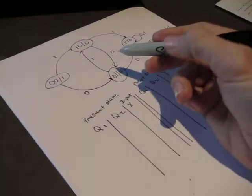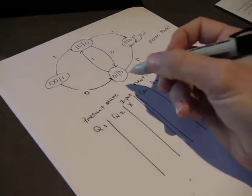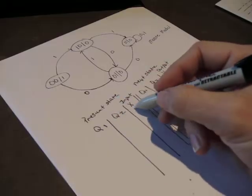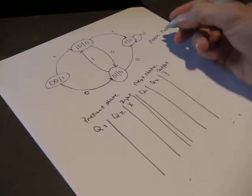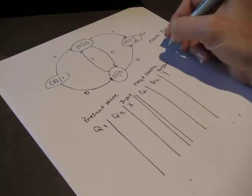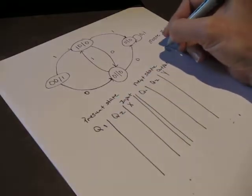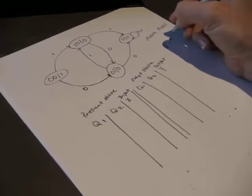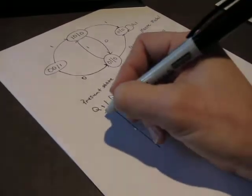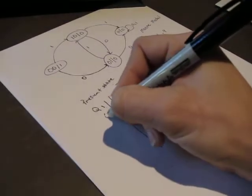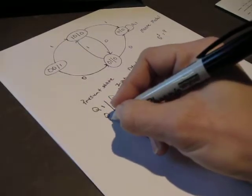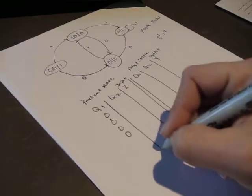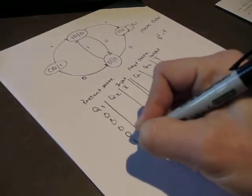We have two states and one input, so that's three variables. Two to the three is eight, so we're going to need eight rows to cover all our possible combinations.